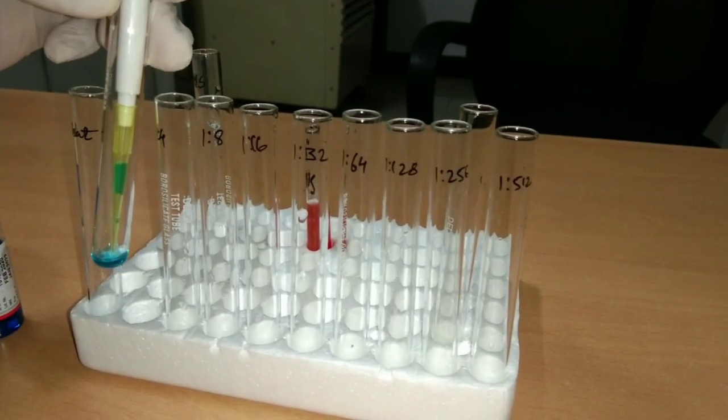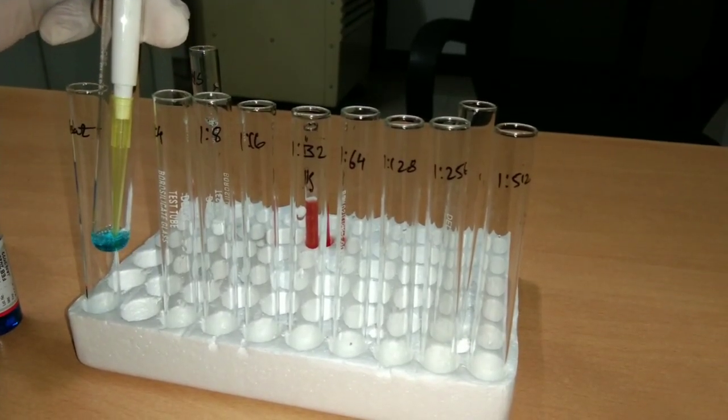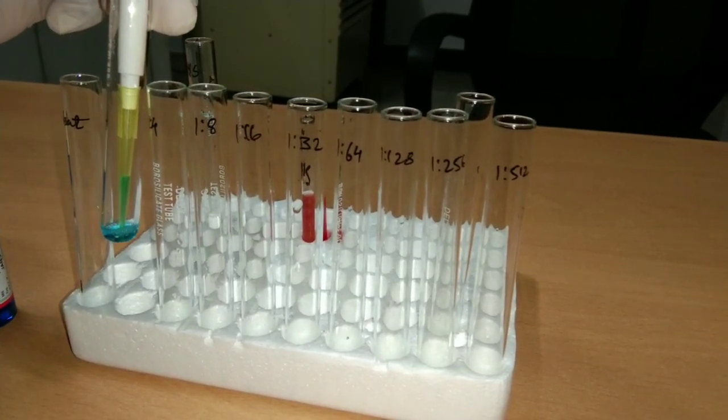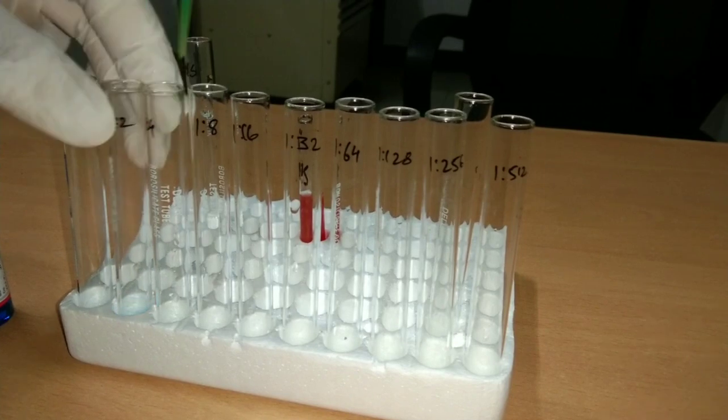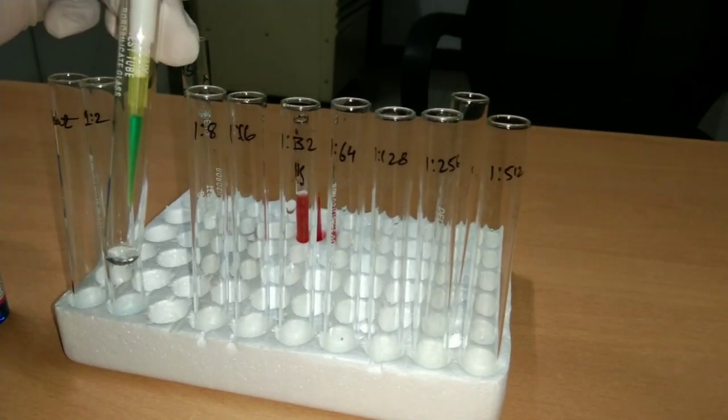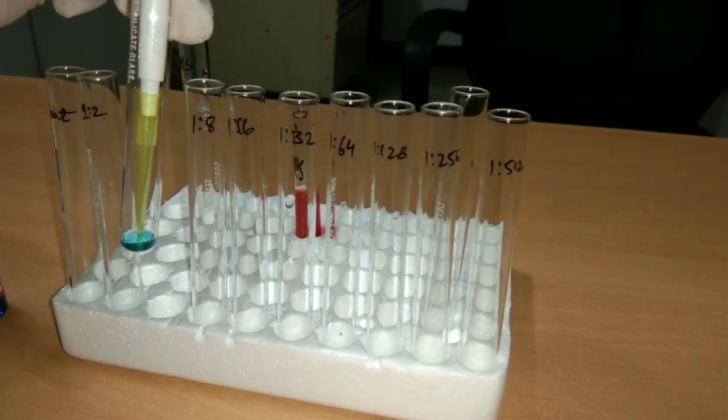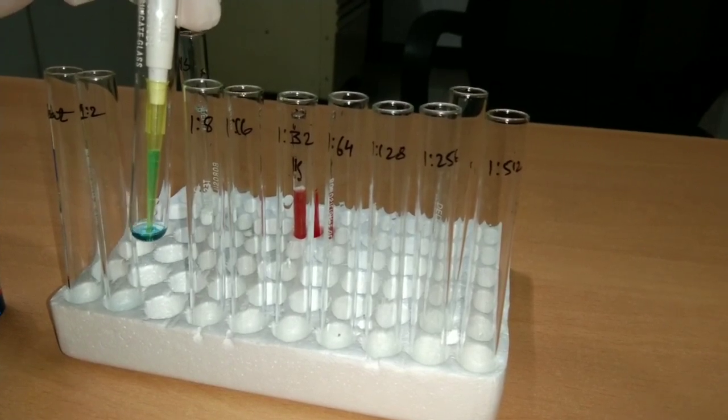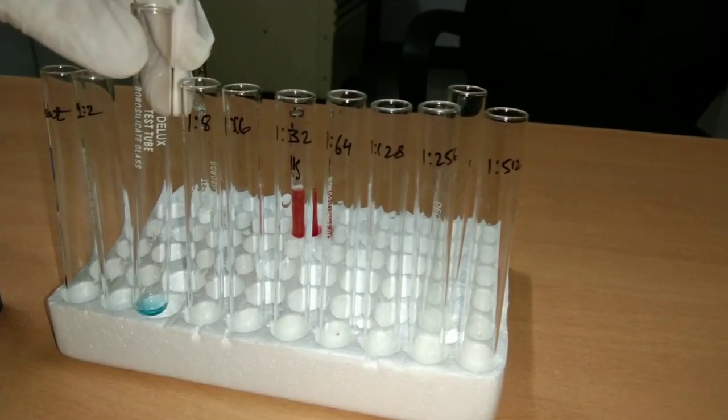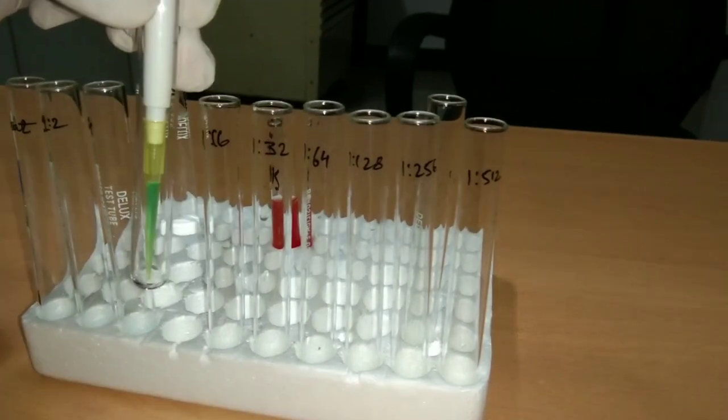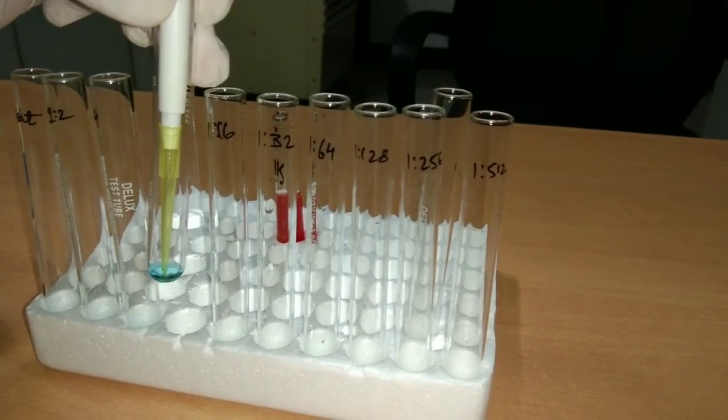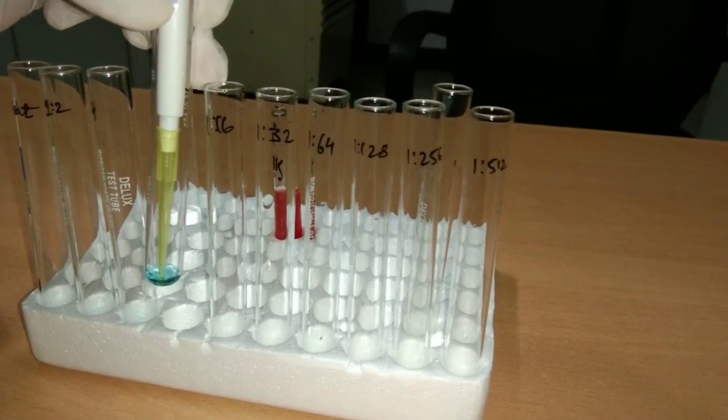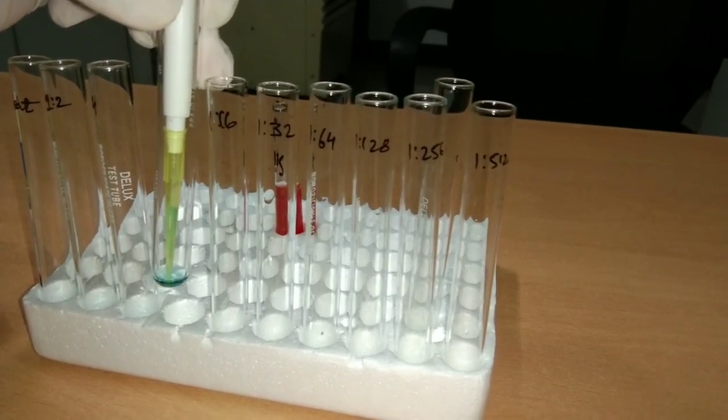Mix the content of 1:2 dilution several times and transfer 100 microliters to the next tube. Mix the contents and transfer 100 microliters into the next tube. Continue the same process for all the dilutions.